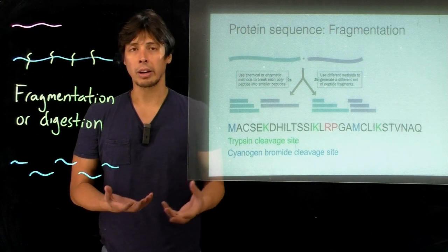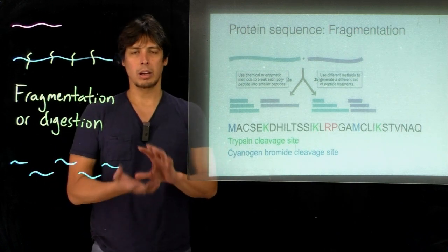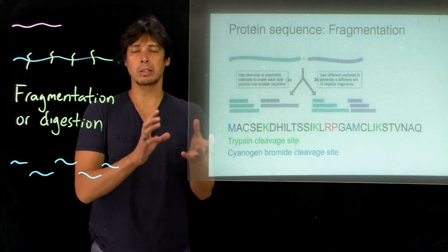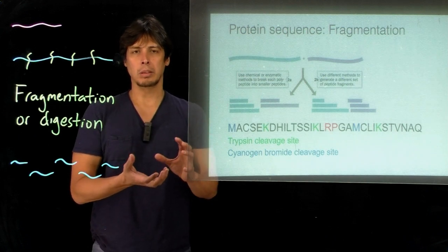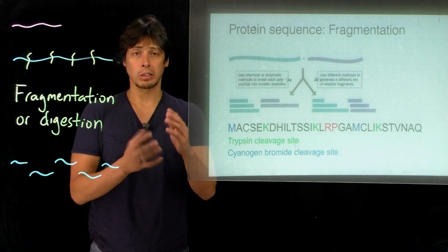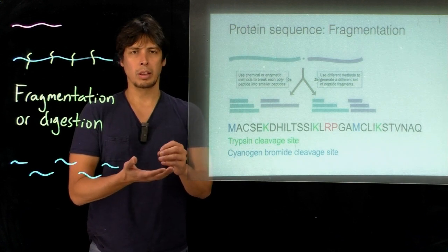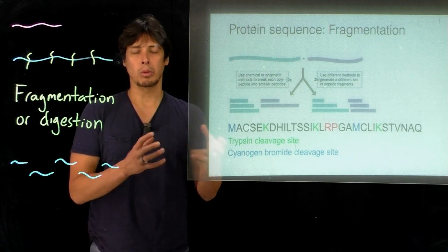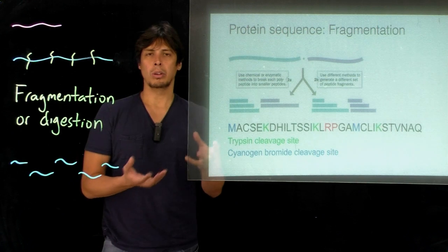This is colored red because a proline is directly behind this arginine, and that inhibits the ability of trypsin to cleave here. So lysine or arginine with a proline adjacent to it is not going to cleave this peptide in that fashion.